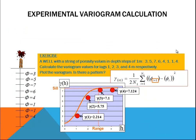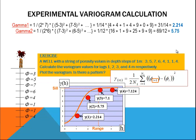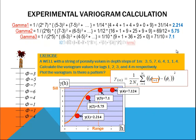The solution of the equation for gamma 1, 2.214, gamma 2, 5.75, gamma 3, 7.1, and gamma 4, 7.124.